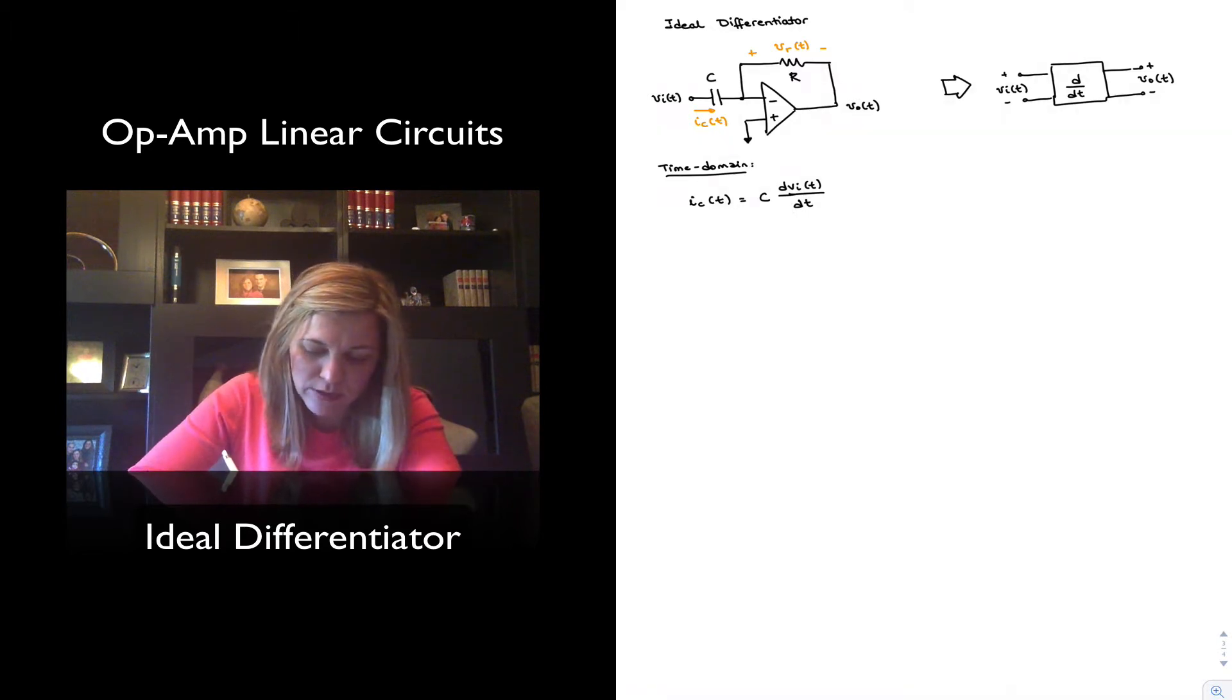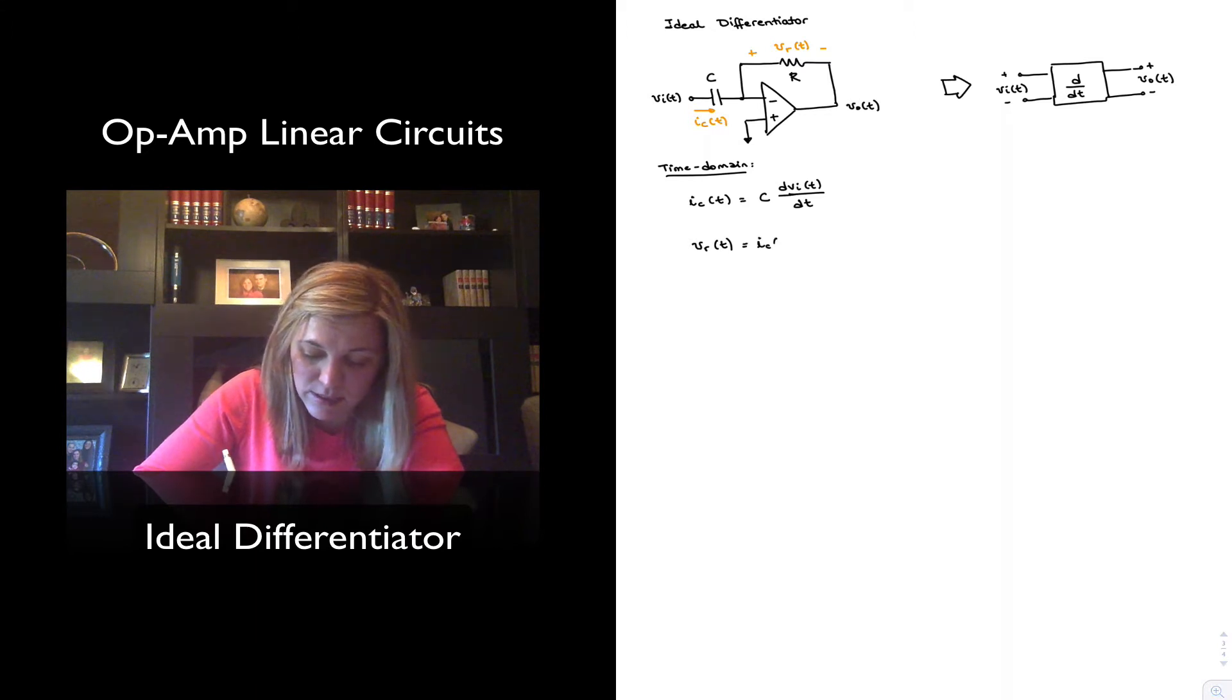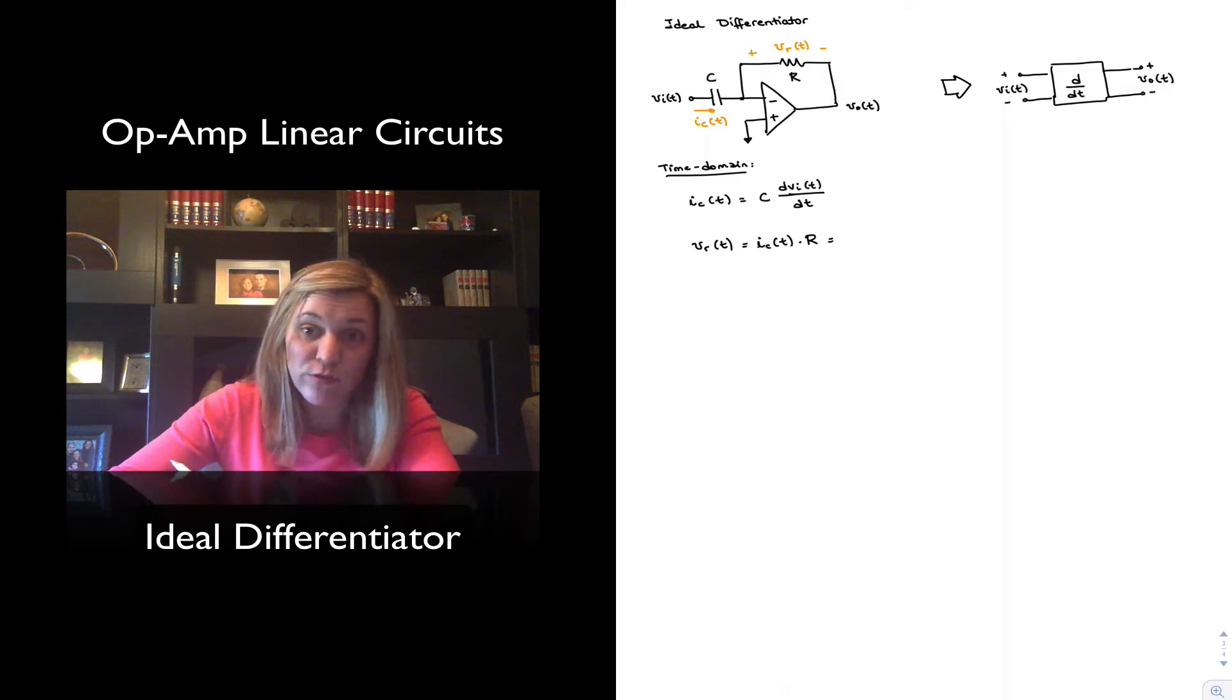I can also write the expression for my voltage across the resistor, VR as a function of t. It's going to be equal to that current, IC as a function of t, times the resistance R. And I can rewrite that in terms of the expression for current that I have previously written as R times C dVi/dt.